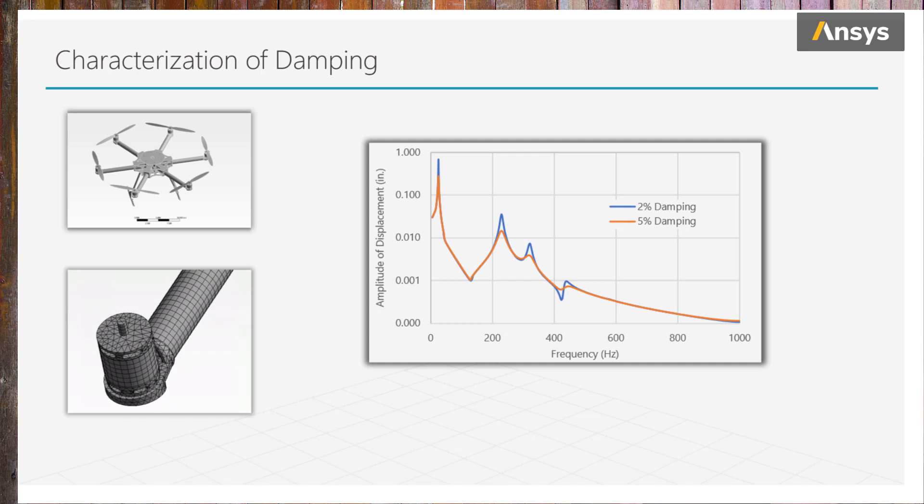How much will this forced vibration cause the drone arm to displace? This depends on the magnitude of the force vibration, the stiffness of the arm, but also the damping ratio of the system. We can see in the graph the effect the damping has on the amplitude of the vibration response.